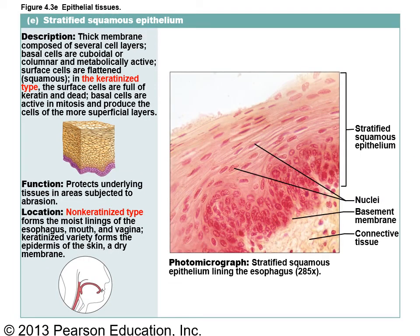Stratified squamous epithelium actually has multiple layers. There are two types: keratinized stratified squamous, which is a dry membrane like the surface of the skin where the outer layers of cells are dead; and non-keratinized stratified squamous, which is a wet lining found in places like the vagina and the esophagus.